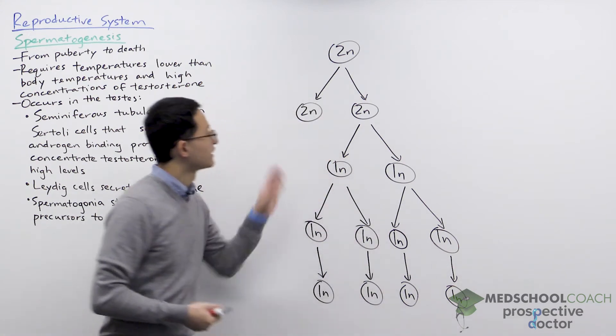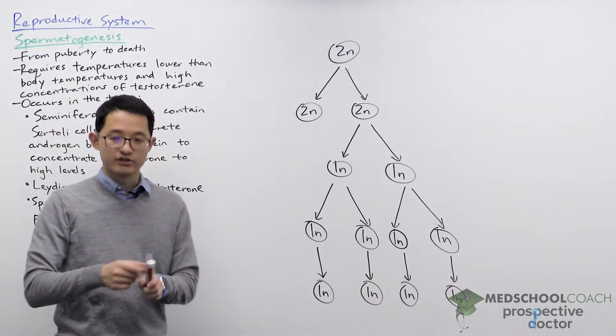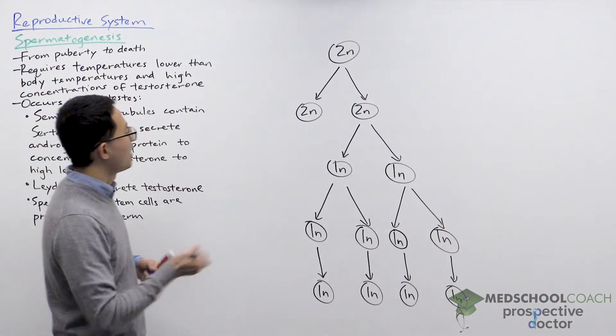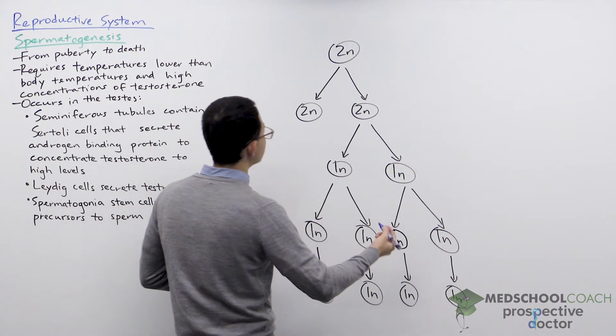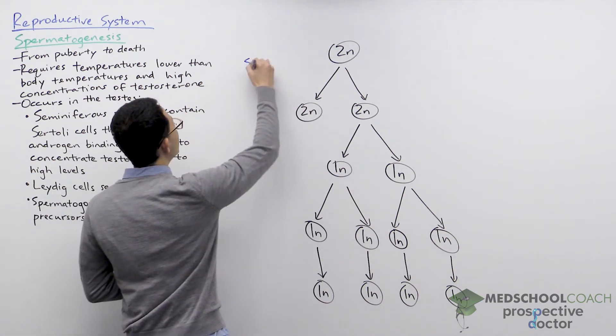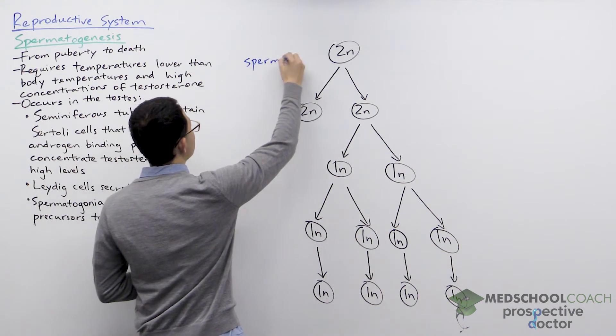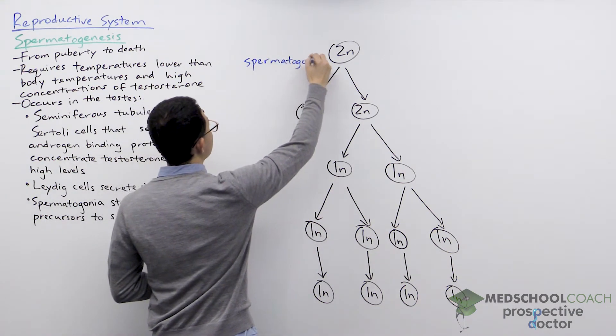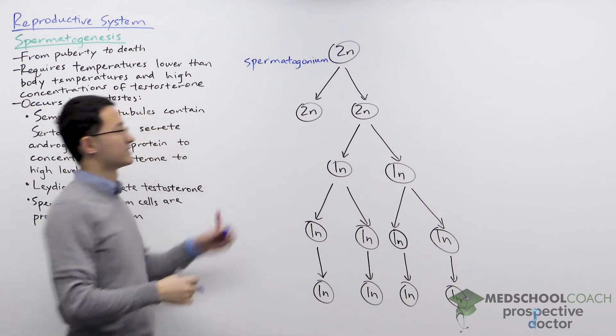So over here we can look at the different cells. To start off at the top we're going to have spermatogonia. And in this case we're going to call it a spermatogonium because that's singular.